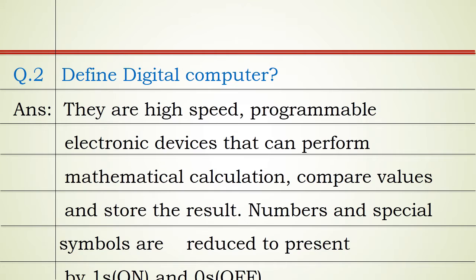Question number two: define digital computer. Answer: They are high speed programmable electronic devices that can perform mathematical calculation, compare values and store the results. Numbers and special symbols are reduced to represents by ones on and zeroes off.